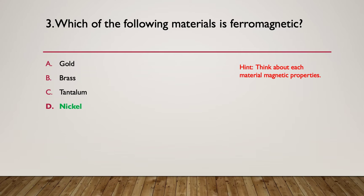The only one here which is ferromagnetic is nickel. Gold is non-magnetic. Brass is non-magnetic. And tantalum is a metal with no magnetic properties. Nickel has some magnetic properties.